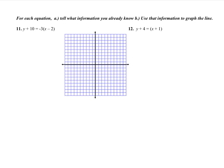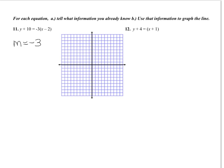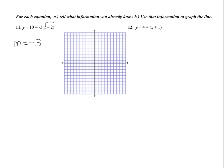Now we're going to take something in point-slope form and graph it. For number 11, the slope is negative 3. The opposite of negative 2 is the x-value, and the opposite of negative 10 is the y-value, giving us the ordered pair (2, -10). So we start at the ordered pair (2, -10), which is way down on the graph.